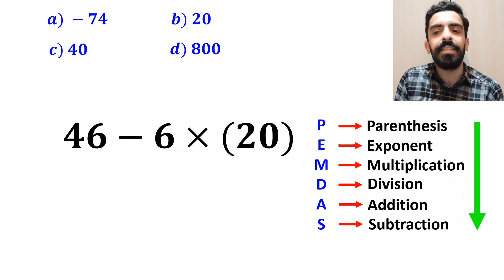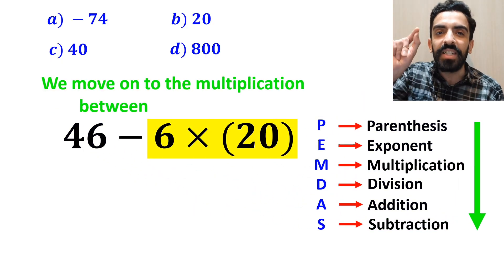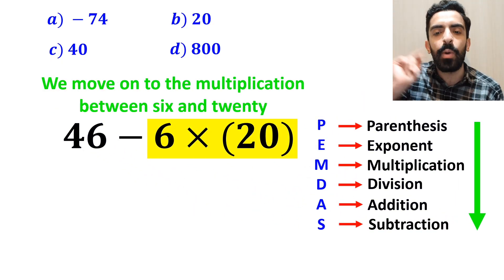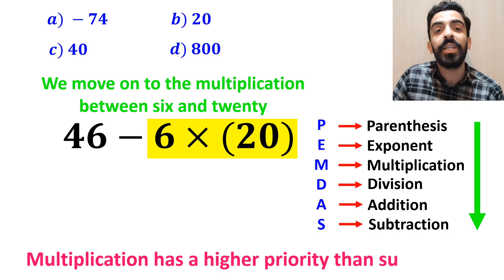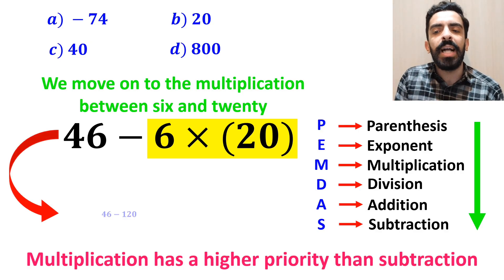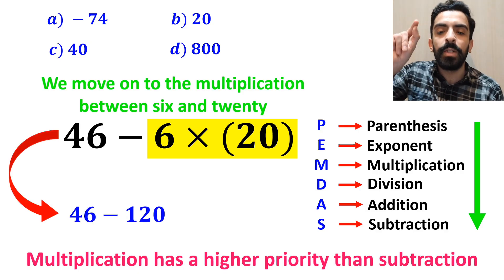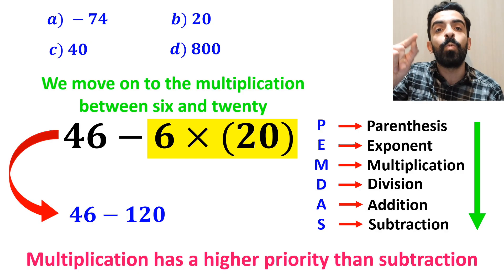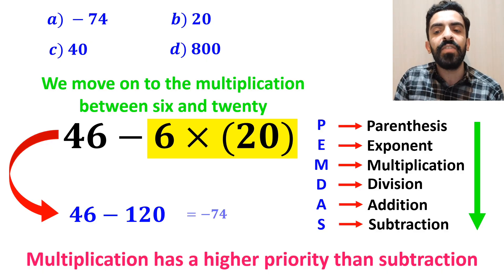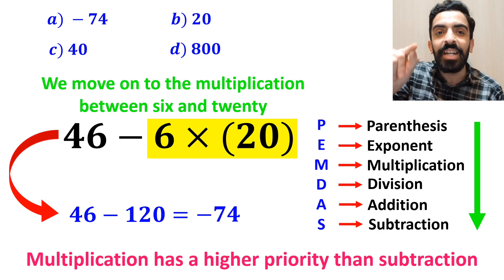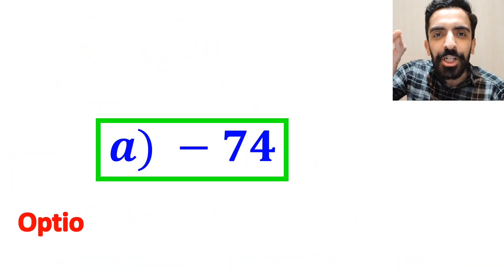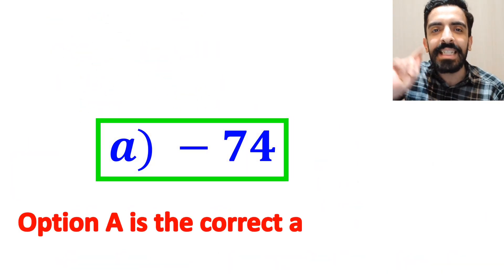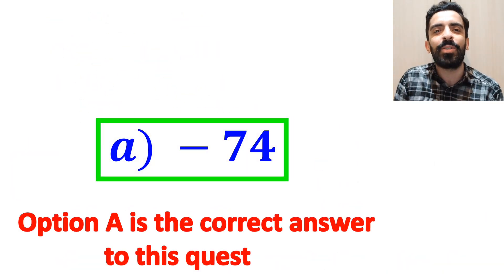In the next step, we move on to the multiplication between 6 and 20, because multiplication has a higher priority than subtraction. So we rewrite this expression as 46 minus 120, which finally gives us the answer negative 74. Therefore, option A is the correct answer to this question.